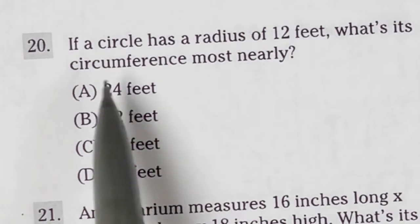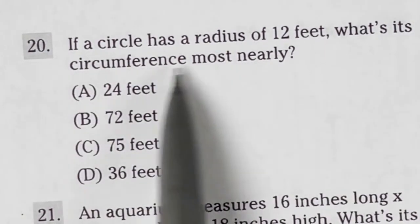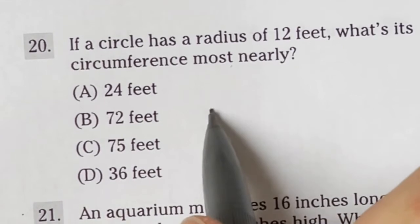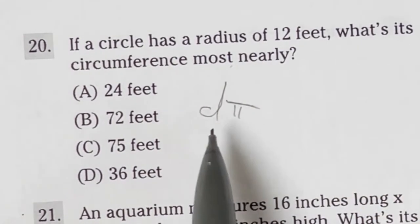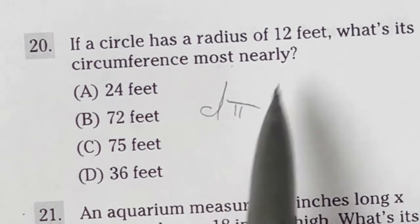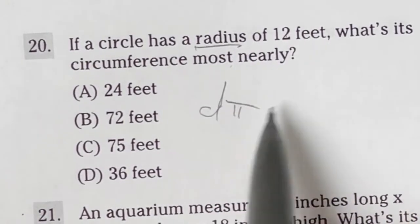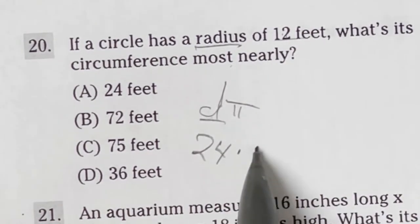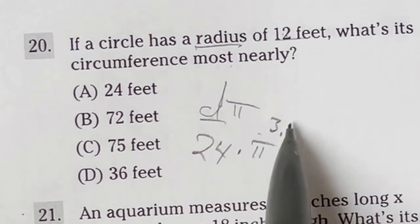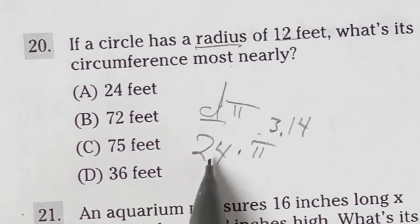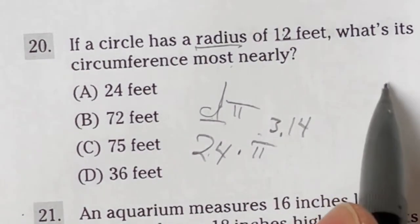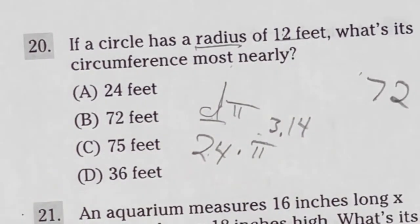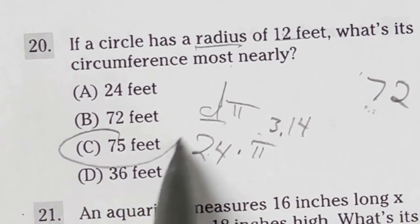For number 20 on the ASVAB mathematical knowledge, it says if a circle has a radius of 12 feet, what's the circumference most nearly? So what is the circumference of a circle? It is known as the diameter times pi. That's what gives you the circumference. So in this case, it's going to be 12 is the radius. So double that will give us the diameter. So double of 12 is going to be 24. And then we have to multiply that by pi. So remember, pi is about 3.14 if you want to go that route. So what is 24 times 3? That's going to give us, we got to carry the 1. So 72. So the answer must be larger than 72. The only answer larger than 72 is option C.